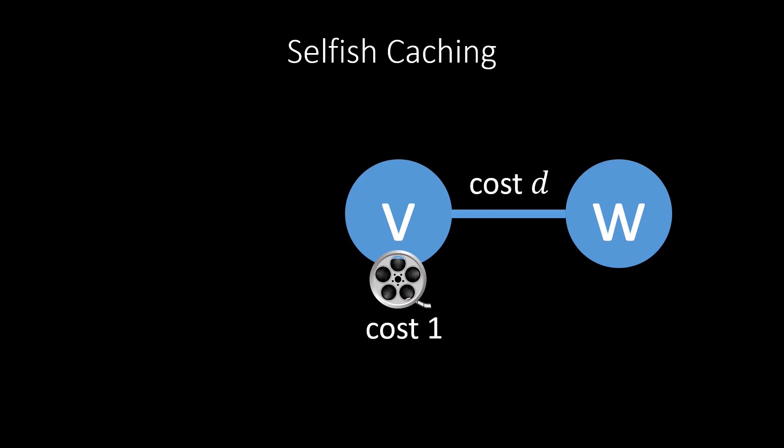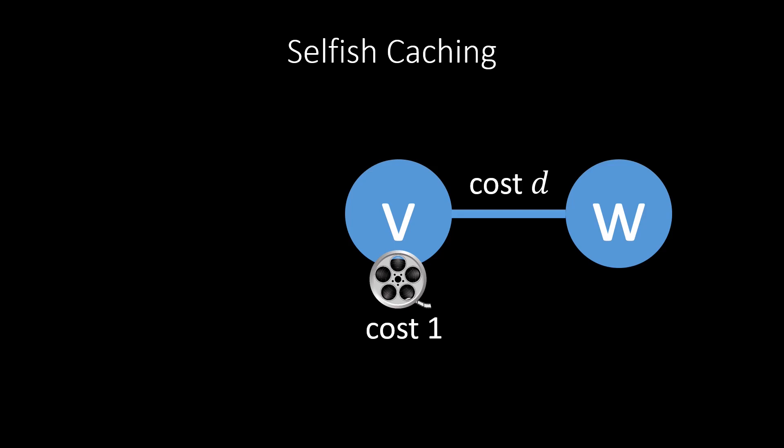So depending on whether the network distance d is smaller than 1, node w will prefer to fetch the movie from node v. If the network distance d is larger than 1, node w prefers to cache the movie directly. If the distance is exactly 1, caching and fetching both cost the same.